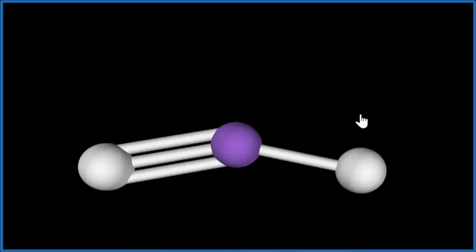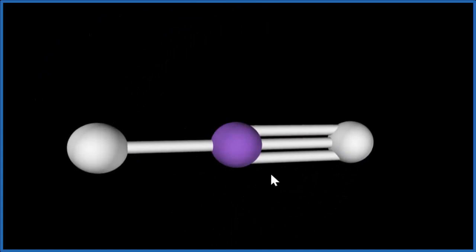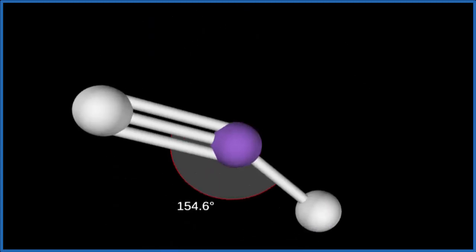And you can see they spread out to be as far away as they can from each other. There aren't any lone pairs on the central carbon here. Our molecular geometry is linear. The bond angles, they're going to be 180 degrees.